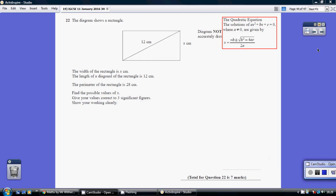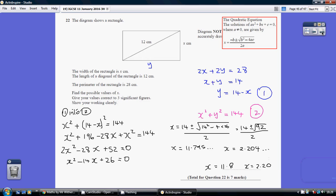Question 22. So, two things going on here. First of all, we are told that the perimeter of the rectangle is 28 centimeters. So, let's call the width y.